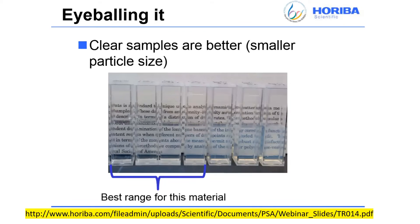The concentration affects the count rate — the strength of the scattered signal. There's a recommended range of count rates, so check your instrument's manual. Although the concepts are the same between vendors, the recommended values may differ.